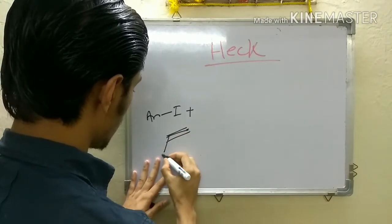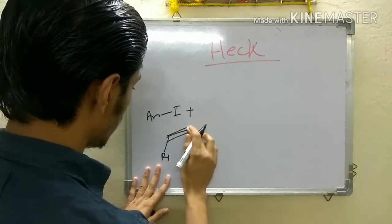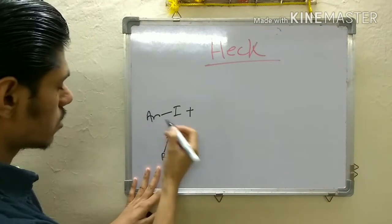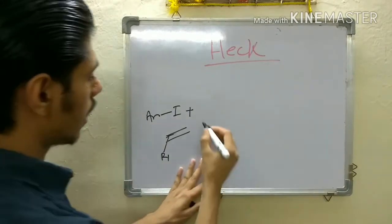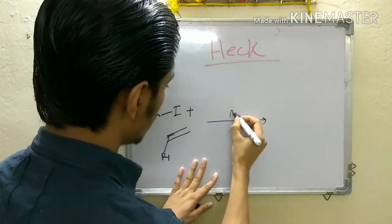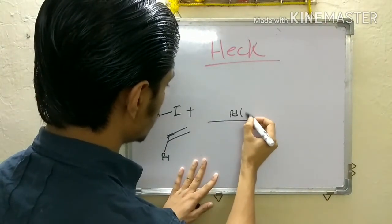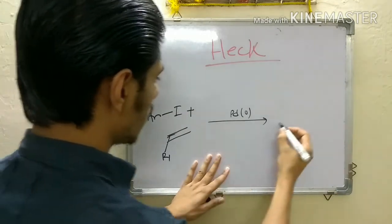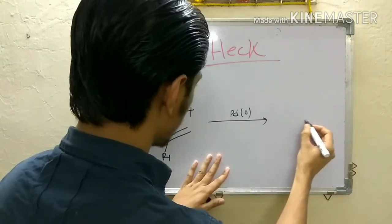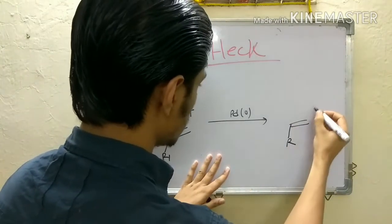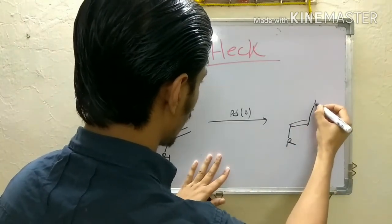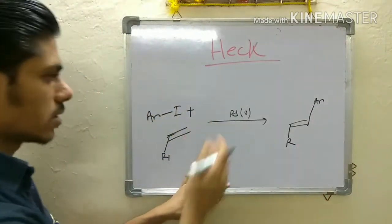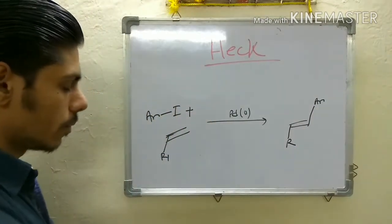So this is your alkene with substituent R1, and this is your aryl halide. This reaction is catalyzed by palladium(0). What you will get is a coupled product — a new C-C bond will be formed.